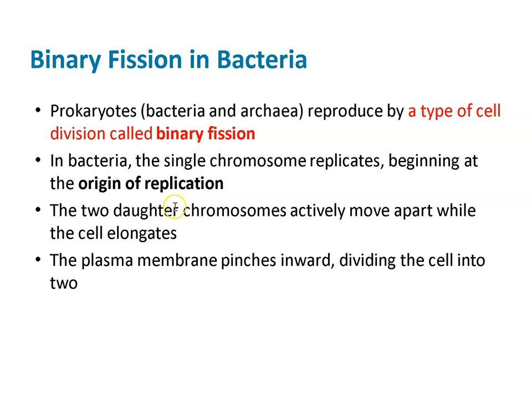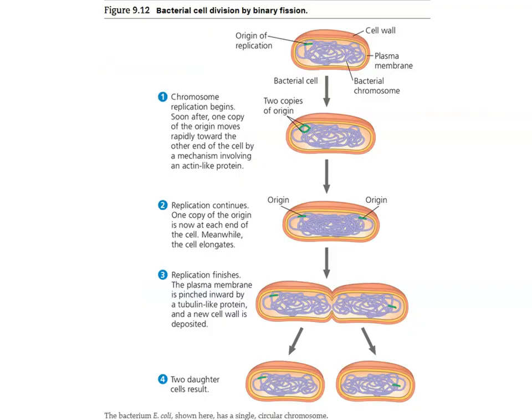Prokaryotes reproduce by binary fission. In bacteria, the single chromosome replicates beginning at the origin of replication. The two daughter chromosomes actively move apart while the cell elongates, and the plasma membrane pinches inward, dividing the cell into two. You can see the chromosome, the origin of replication, and two copies starting to split and replicate. One copy of the origin moves rapidly toward the other end, involving an actin-like protein, replication continues, and the cell elongates and divides. This is how a scratchy throat turns into feeling like you're swallowing glass — bacteria divide pretty quickly.